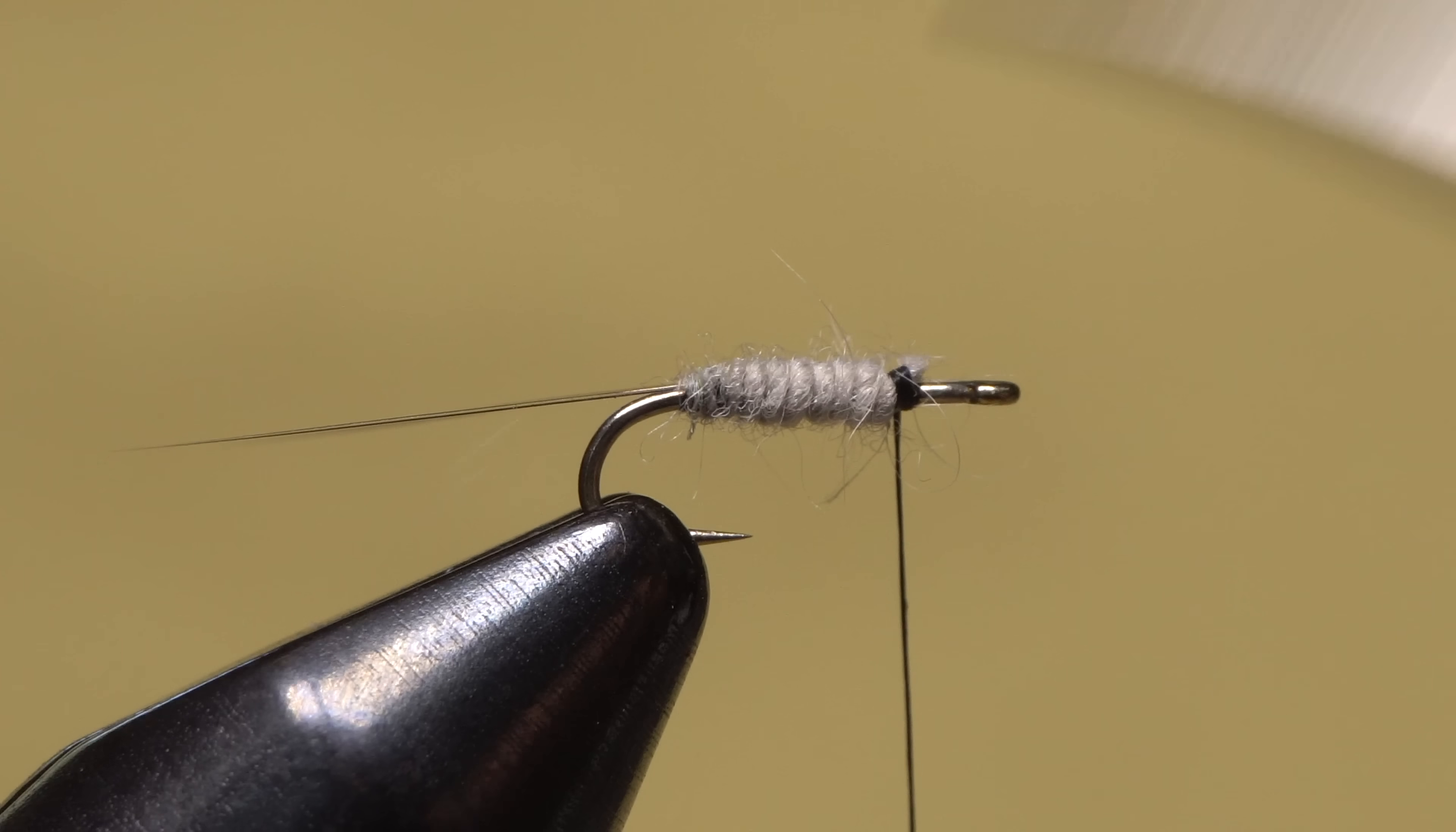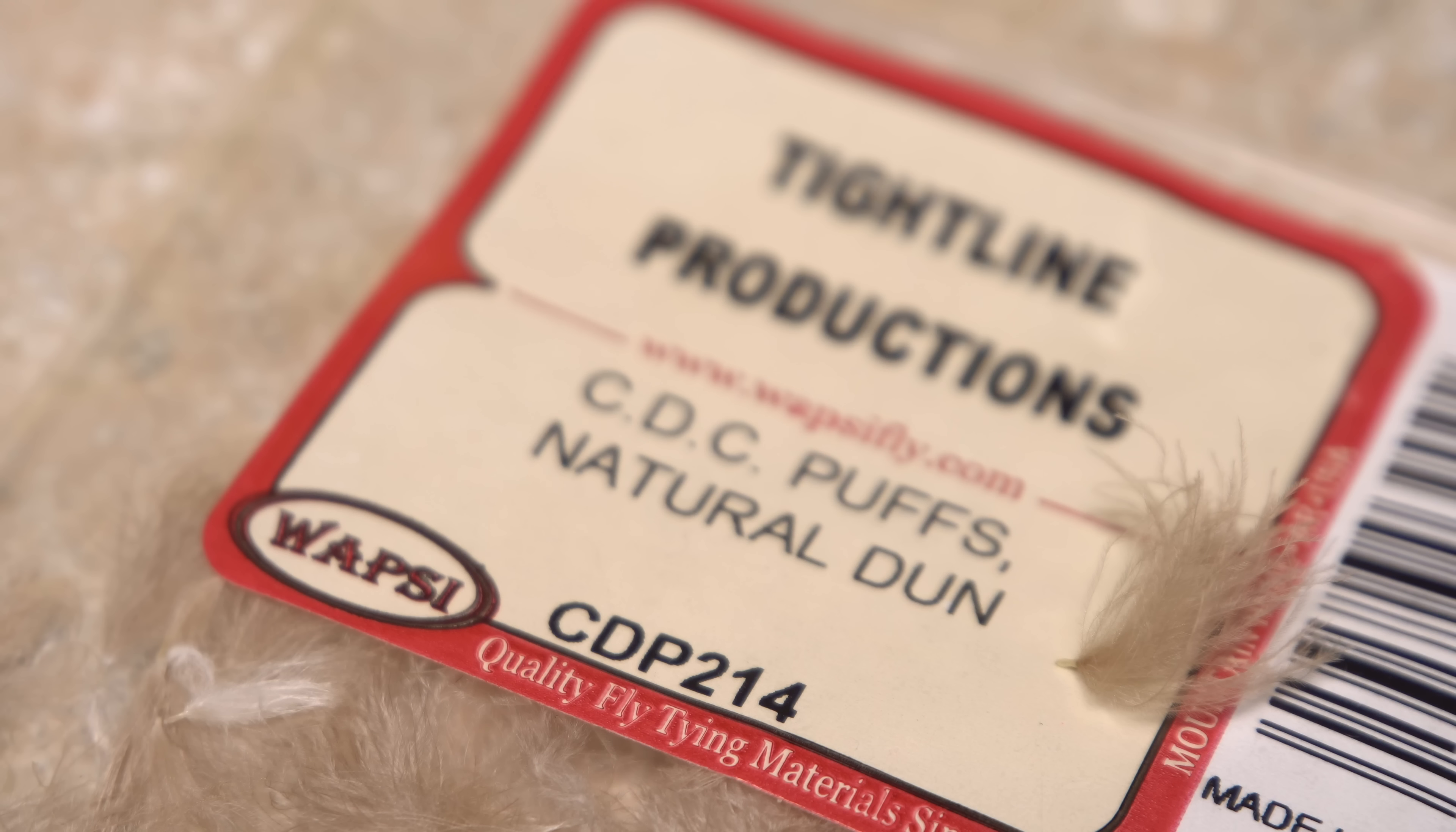When you reach your tying thread, use it to anchor the noodle, then simply snip the excess noodle off close. The body of the fly should now look something like this.